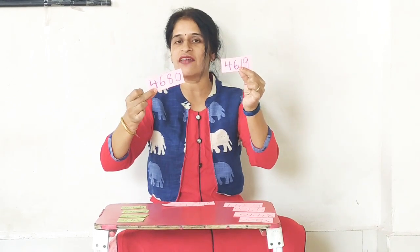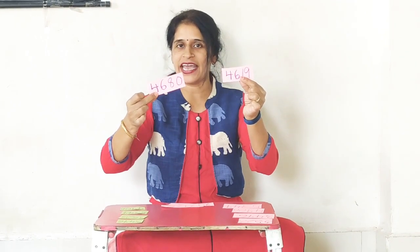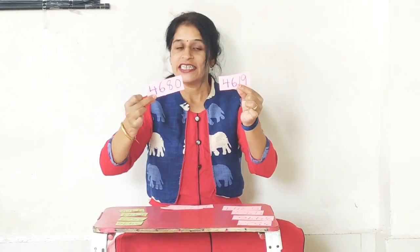4680 is greater than 4619. Is it clear? Similarly, by comparing the numbers and finding out which one is greater and which one is smaller, we can arrange them in ascending order and descending order.